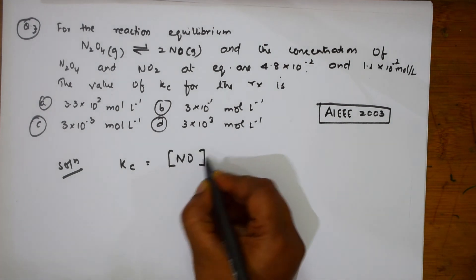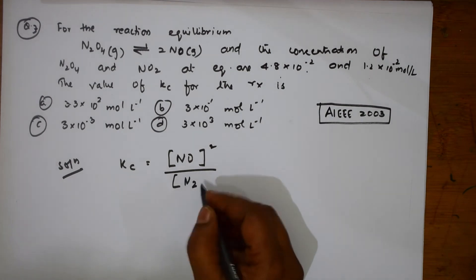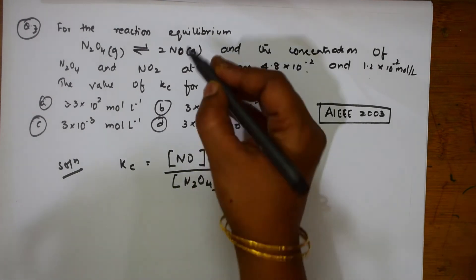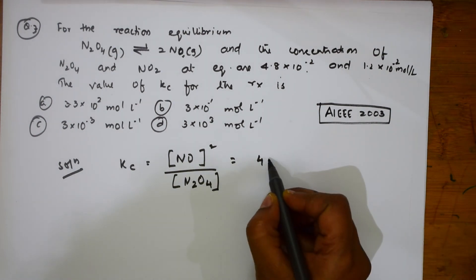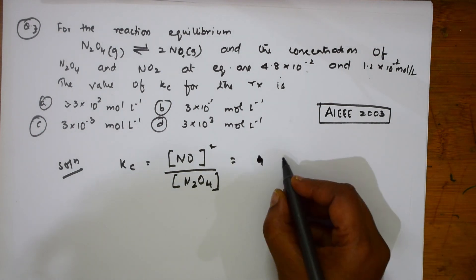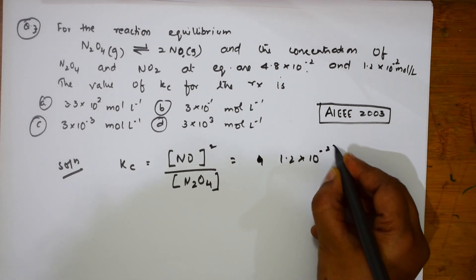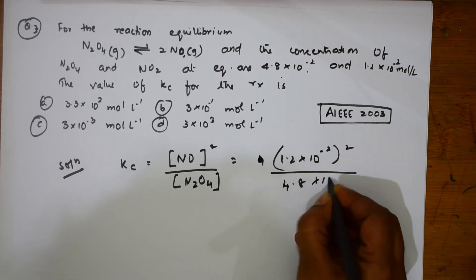Concentration of the product raised to its power by concentration of the reactant. How much is this? This is N2O4, this is NO2, right? How much is this given? This is equal to, N2O4 is how much? 1.2 into 10 to the minus 2 square divided by 4.8 into 10 to the minus 2.